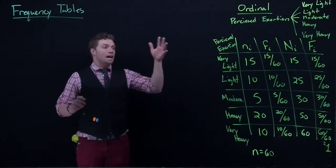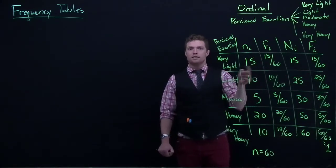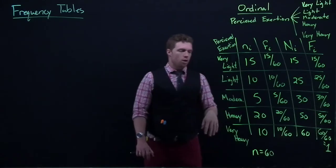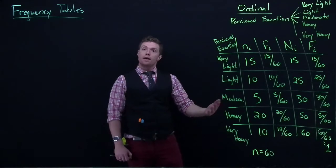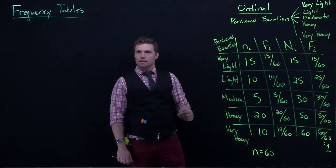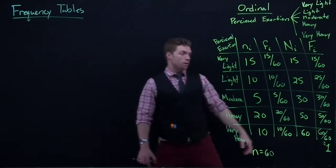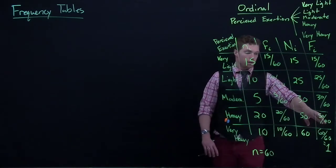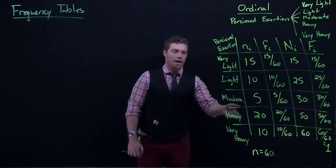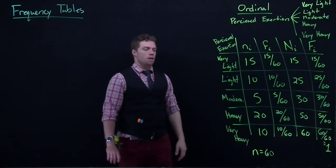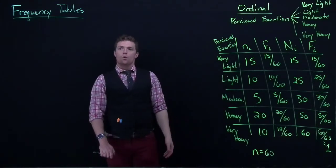All right, so ordinal, because it has this order to it, the questions over here with the cumulative actually make sense. Think about this. If I say, what percent of the time did this player, after he had played, was his physical exertion heavy or lighter? And we can answer that. That's a fair thing to ask. We can come over here and that would be, well, 50 out of the 60 games that he played, he said he was exerting heavy or less.